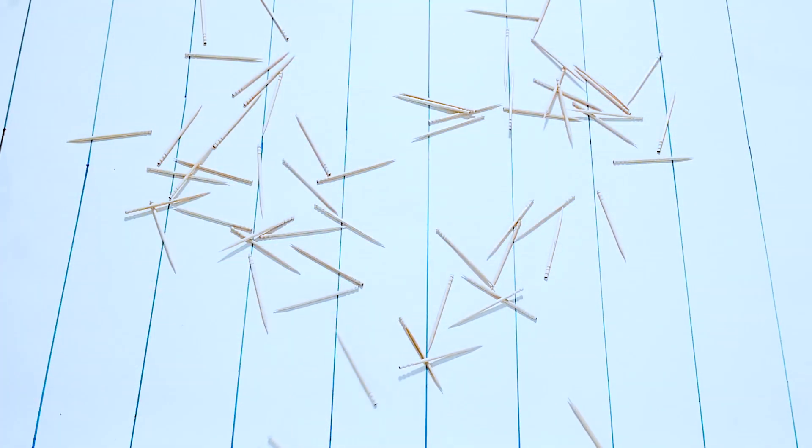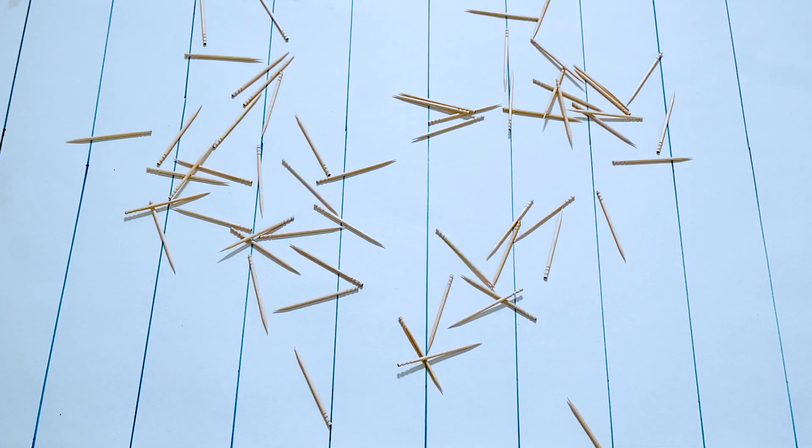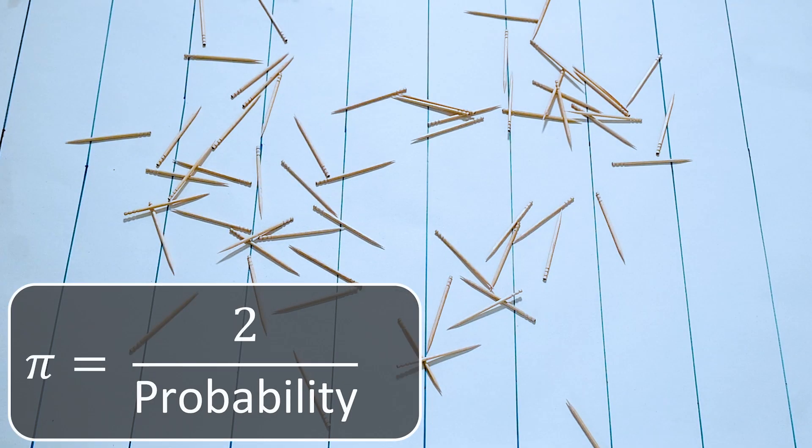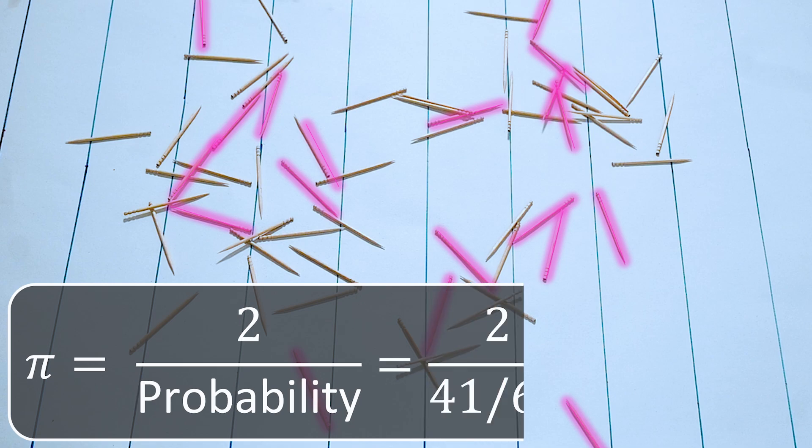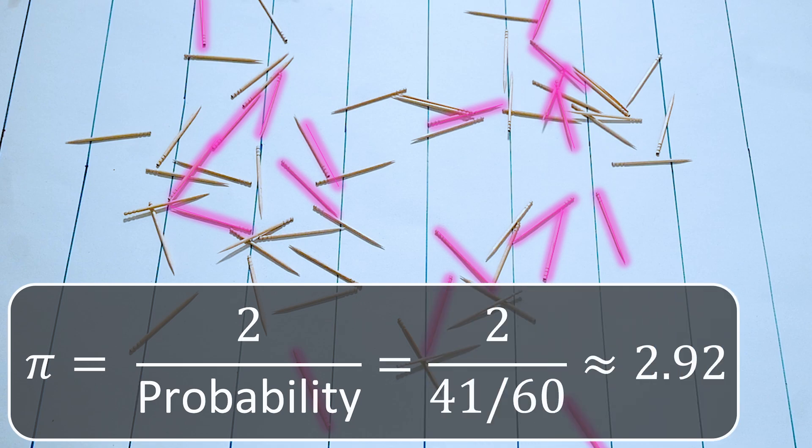It turns out that I can approximate the value of pi with the following remarkably simple formula: pi is just 2 divided by the probability that you hit a line. Since I count that 19 of my toothpicks don't hit the line and thus 41 of my 60 do, this is going to give me a value for pi of about 2.92.